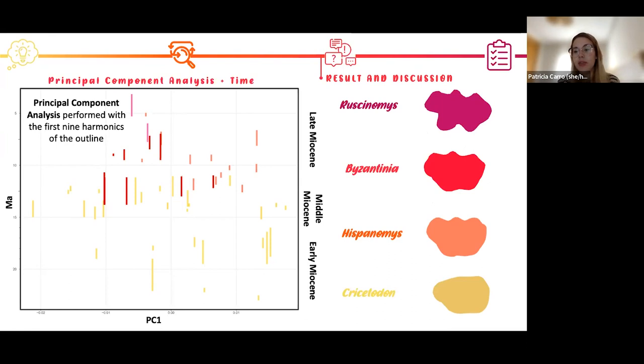I used four different colors to describe these different morphologies. We have a straight morphology for Cricetodon, the most primitive species, and a higher degree of trilophodont morphology until the highest degree of trilophodont morphology of Ruscinomys.